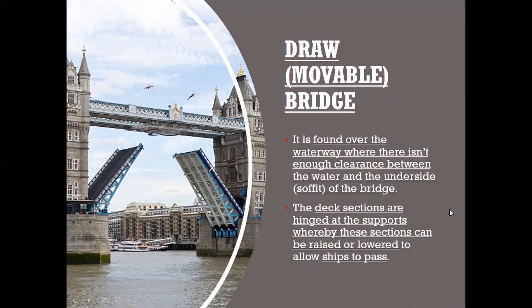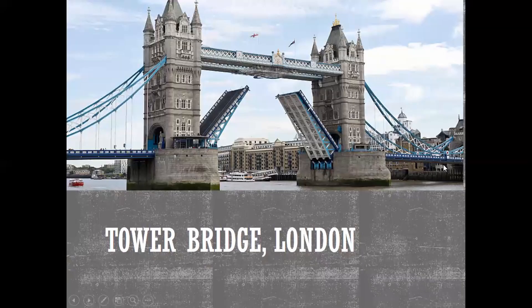Then you get a drawbridge or movable bridge. It is found over a waterway where there isn't enough clearance between the water and the underside — which is called the soffit — of the bridge. The deck sections are hinged at the supports, whereby these sections can be raised or lowered to allow ships to pass through. That is the Tower Bridge in London — a very famous and unique bridge.